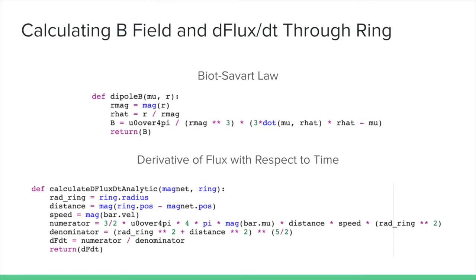We can calculate the magnetic field at any location given a magnetic dipole moment using the Biot-Savart law explored in Lab 3. To calculate the derivative of flux with respect to time, we can implement a variation of the Biot-Savart law that takes into account the inner area of the ring normal to the magnetic field.